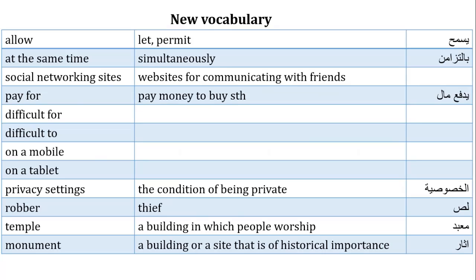Requirement: something that is demanded. الشيء المطلوب عشان أكمل العملية. Allow: let أو permit، يسمح. Social networking sites: websites for communicating with friends, نفس السوشال ميديا. Pay for: pay money to buy something. بدفع النقود علشان أشتري شيء ما.